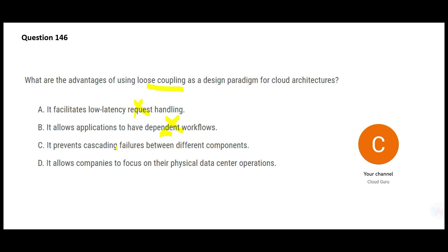Option C says it prevents cascading failures between different components — which is perfectly correct. If one component fails, the other should not be affected. That's the whole purpose. Option D says it allows companies to focus on physical data center operations — no, AWS is about using AWS data centers and getting rid of your on-prem. So D is wrong. C is the final answer.